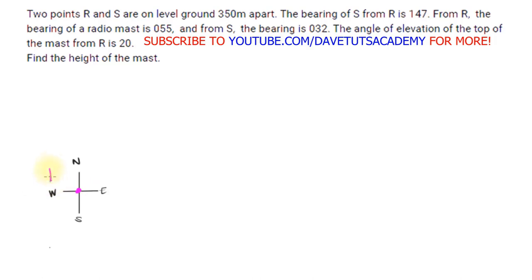We're told that the bearing of S from R is 147 degrees. 147 is going to be in the second quadrant, because from north to east is 90 degrees and from north to south is 180 degrees. So 147 lies between 90 and 180, placing it somewhere in that quadrant. We indicate that direction and extend that line from point R, giving us the position of point S.